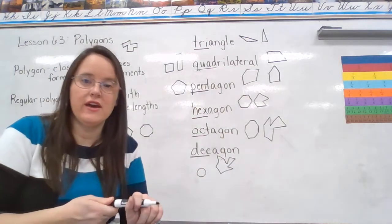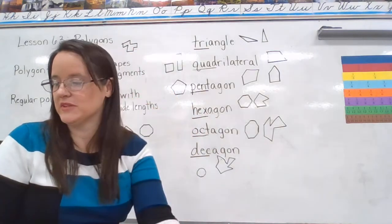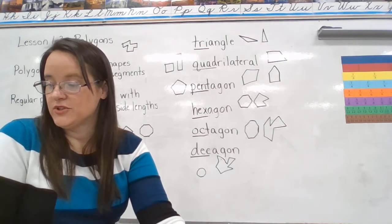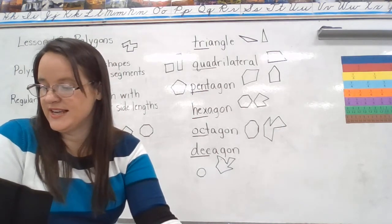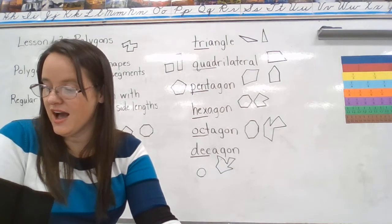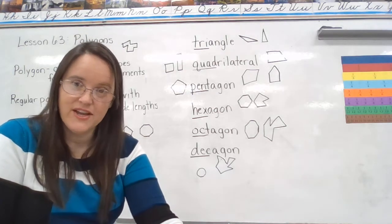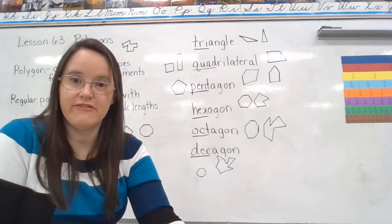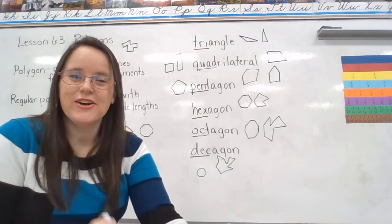We are going to move on to lesson practice. It says draw an example of each of these polygons: a triangle, a quadrilateral, a pentagon, a hexagon, an octagon, and a decagon. It does not say they need to be regular, so as long as you have the right number of sides and you've created a flat, closed shape with straight sides, you are good to go.